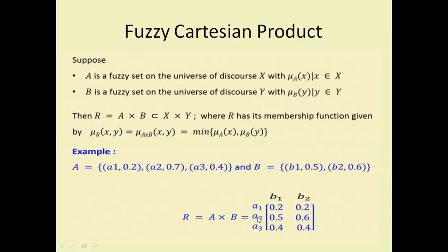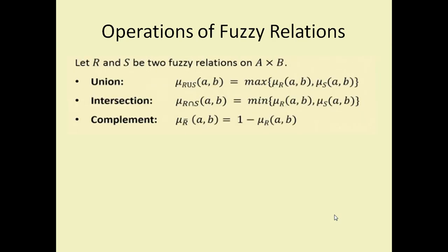To calculate the fuzzy Cartesian product, we take the minimum of the two membership values for each pair. So: min(0.2, 0.5)=0.2, min(0.2, 0.6)=0.2, min(0.7, 0.5)=0.5, min(0.4, 0.5)=0.4, min(0.7, 0.6)=0.6, min(0.4, 0.6)=0.4. We get the minimum value and represent it in a matrix — that is the fuzzy relation.